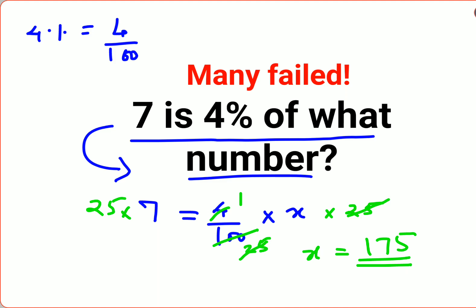Now let's put it back in the equation for verification. We will say 4 percent of the number is 175. So this is 1 and 25, and 25 times 7, so the answer comes out to be 7.